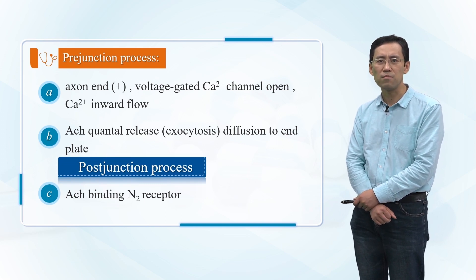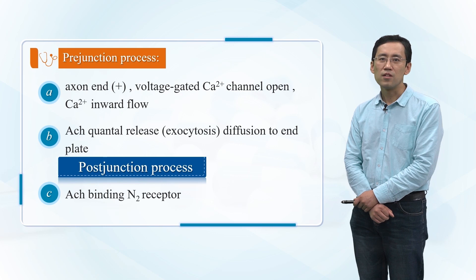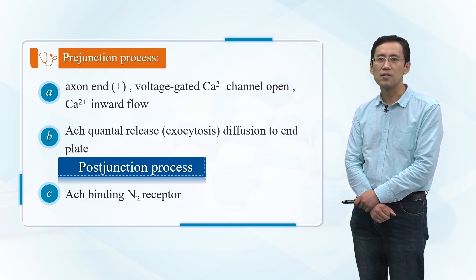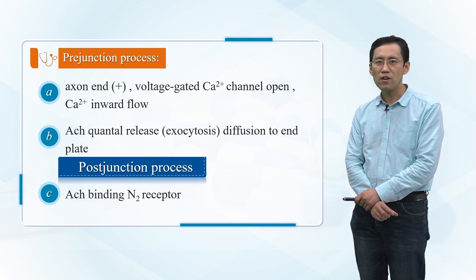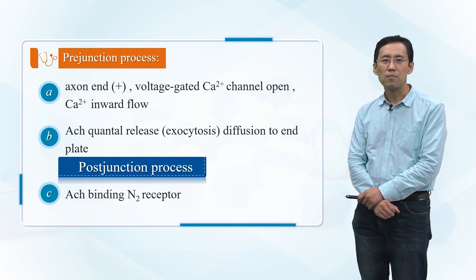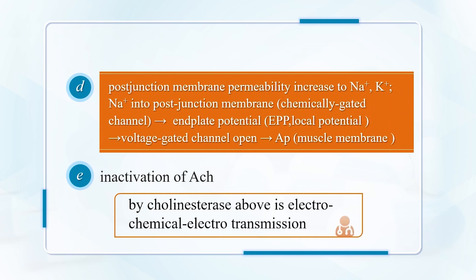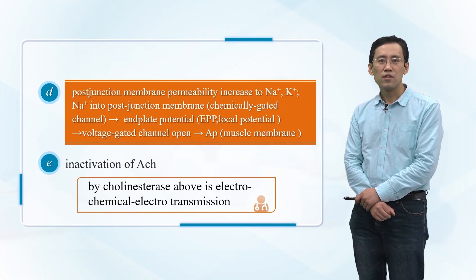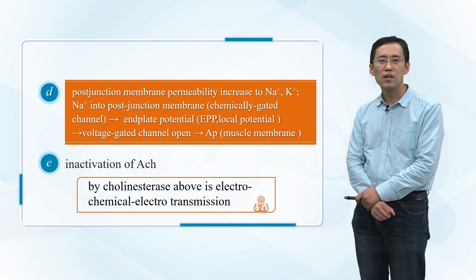Starting from the pre-junction process: the axon end voltage-gated calcium channel opens and calcium ions flow inward. Then acetylcholine is released in a small amount through exocytosis. It diffuses to the end plate — the post-junction process. The ACh binds to its receptor, increasing the post-junction membrane permeability to sodium and potassium. The sodium ions flow into the post-junction membrane and the chemical-gated channel opens.